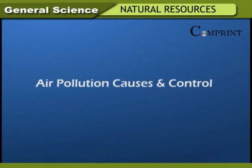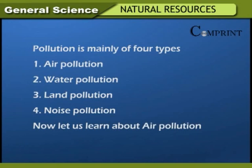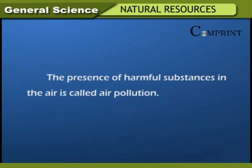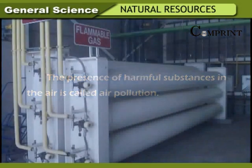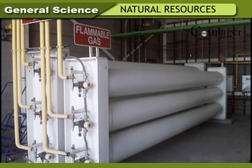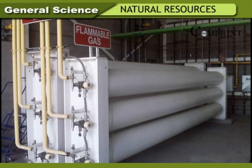Air pollution causes and control: Pollution is mainly of four types — air pollution, water pollution, land pollution, and noise pollution. The presence of harmful substances in the air is called air pollution. The Indian government has set up the Central Pollution Control Board at the national level, and the state government has set up the Andhra Pradesh Pollution Control Board. Presently, compressed natural gas (CNG) is being used, and by using this, we need not worry about most factors causing pollution except carbon dioxide.